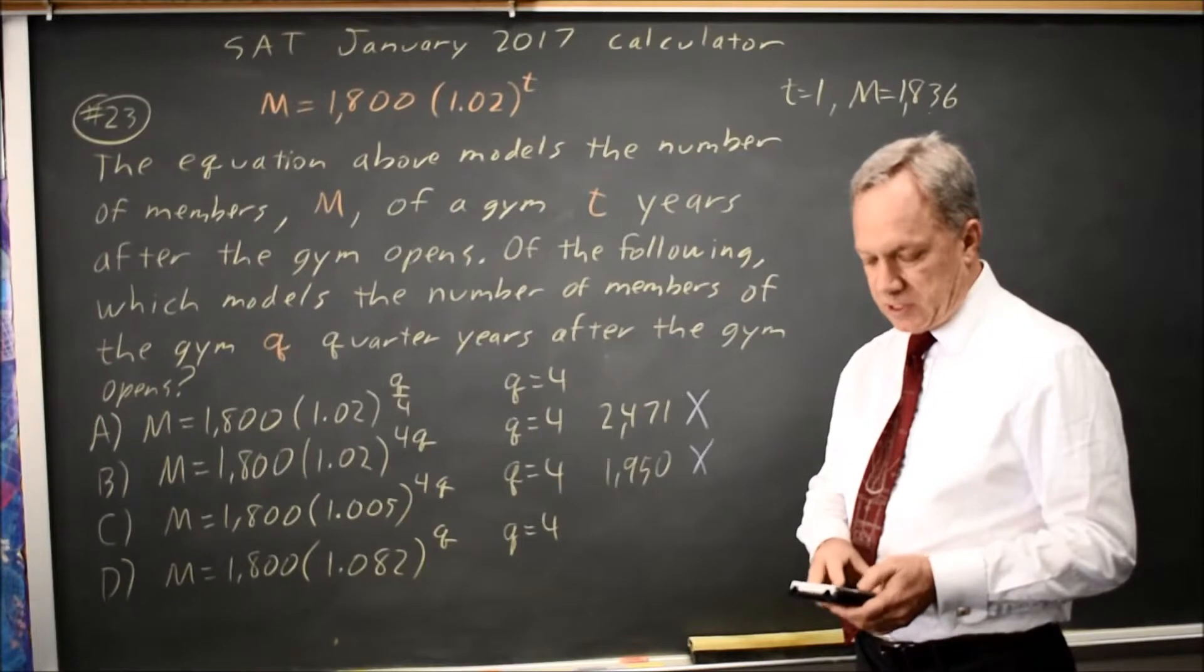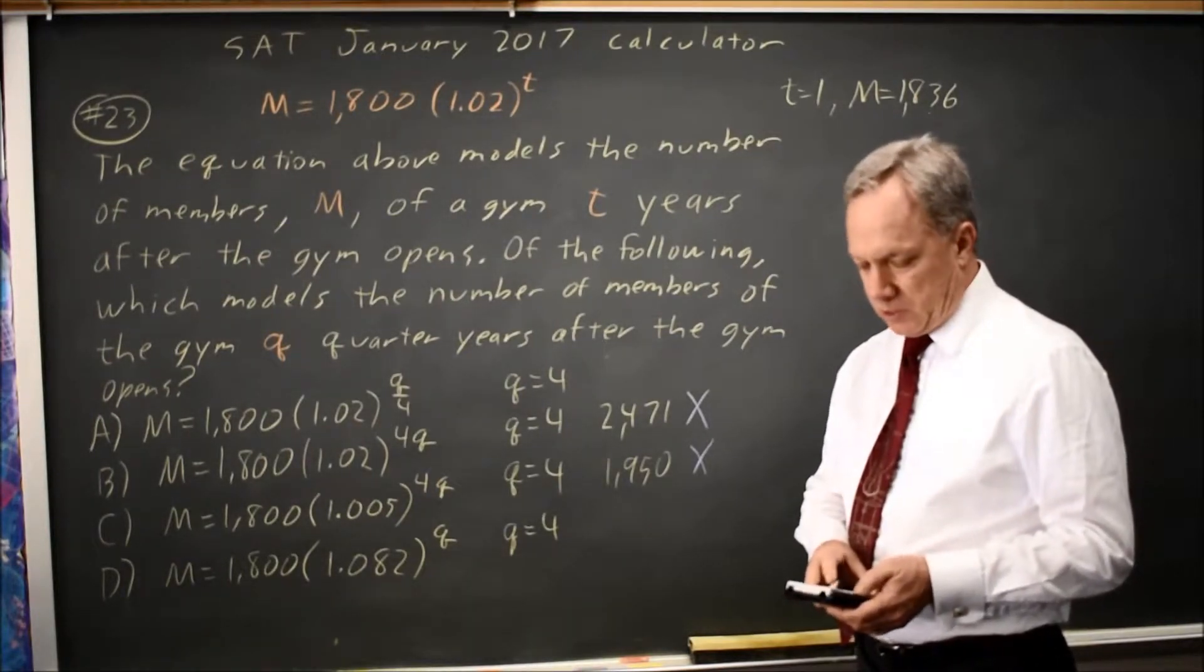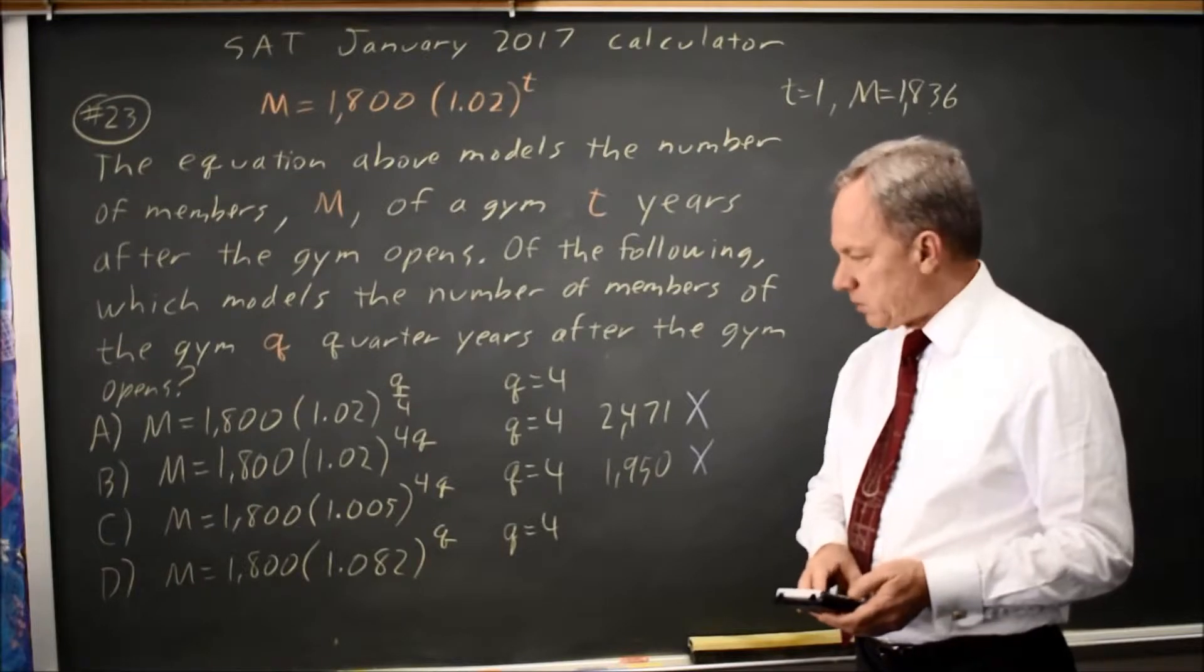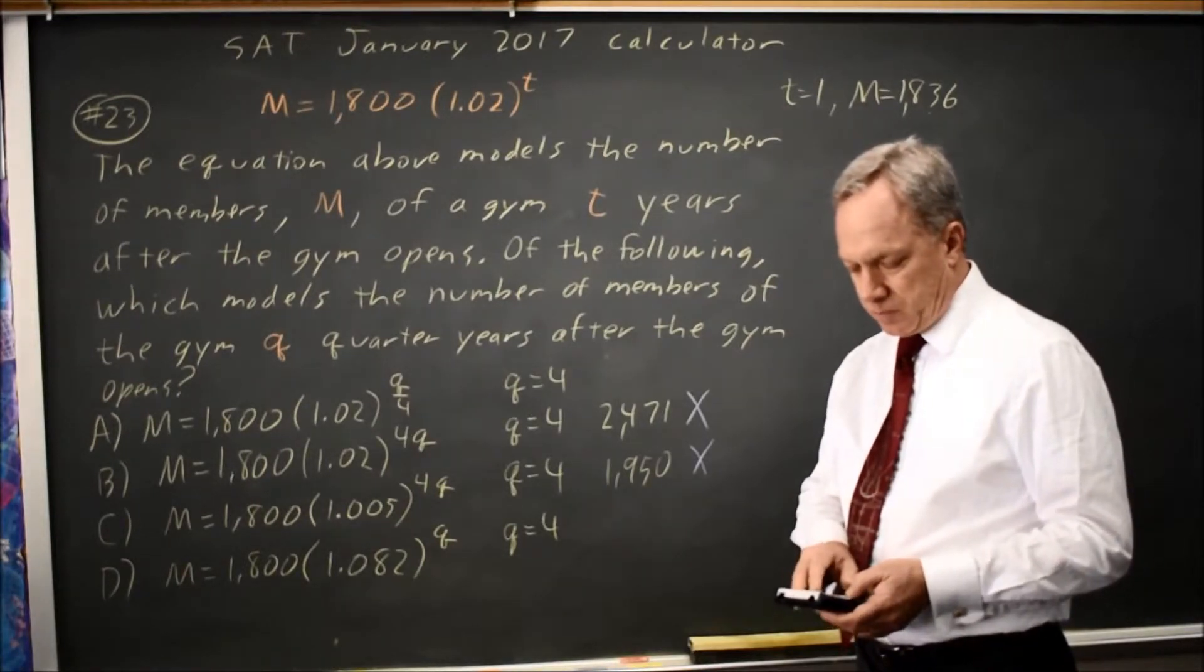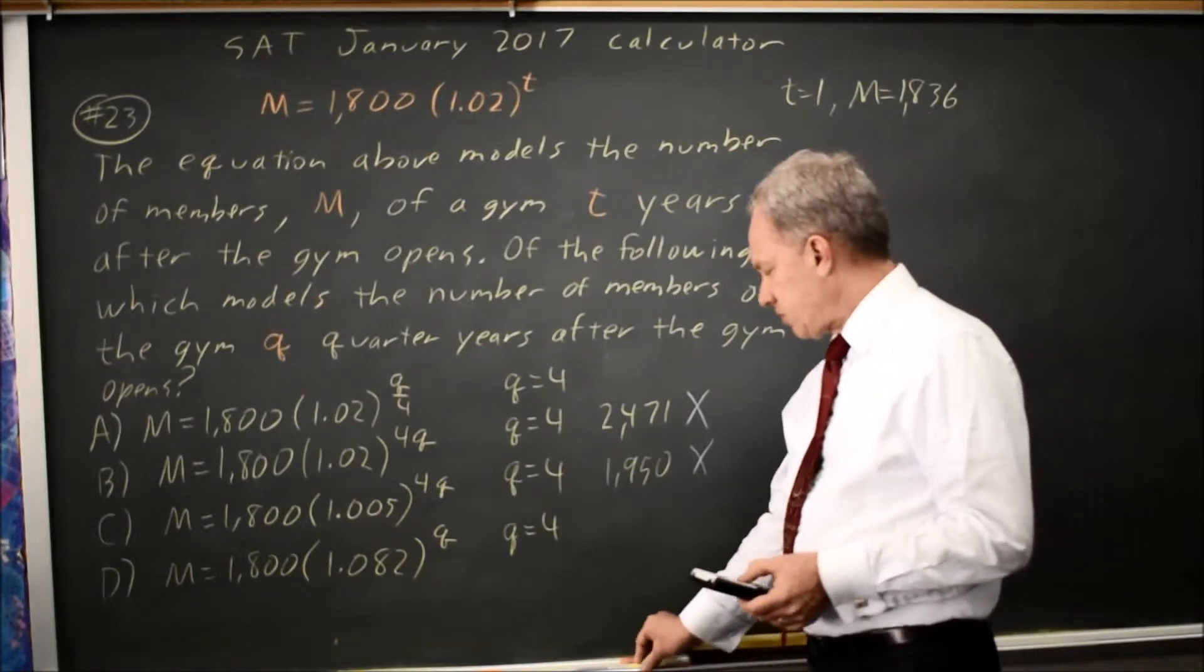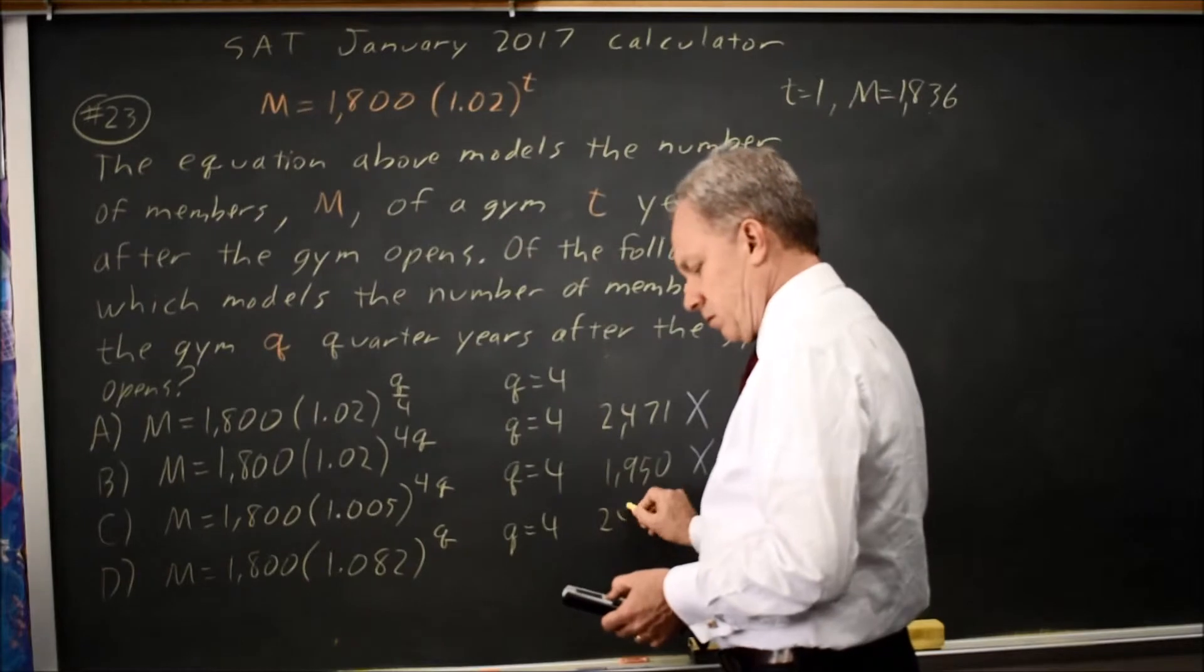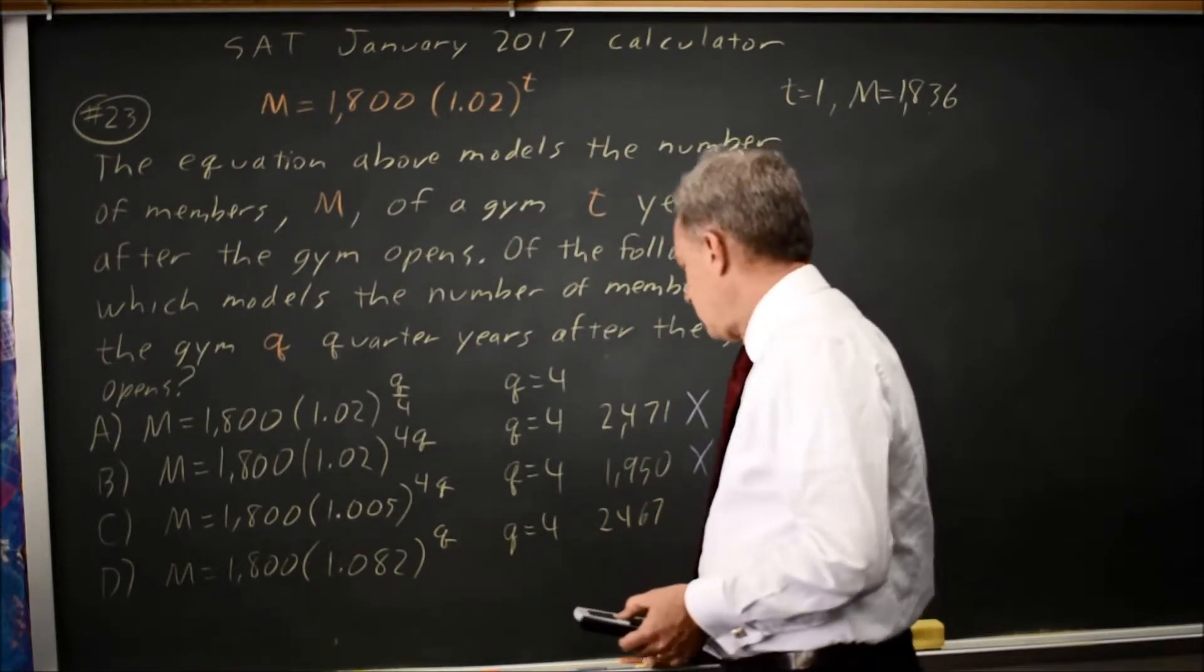Let's try choice D: 1800 times 1.082 to the q. At 4 quarters, which is the same as 1 year, I get 2467, and that's wrong.